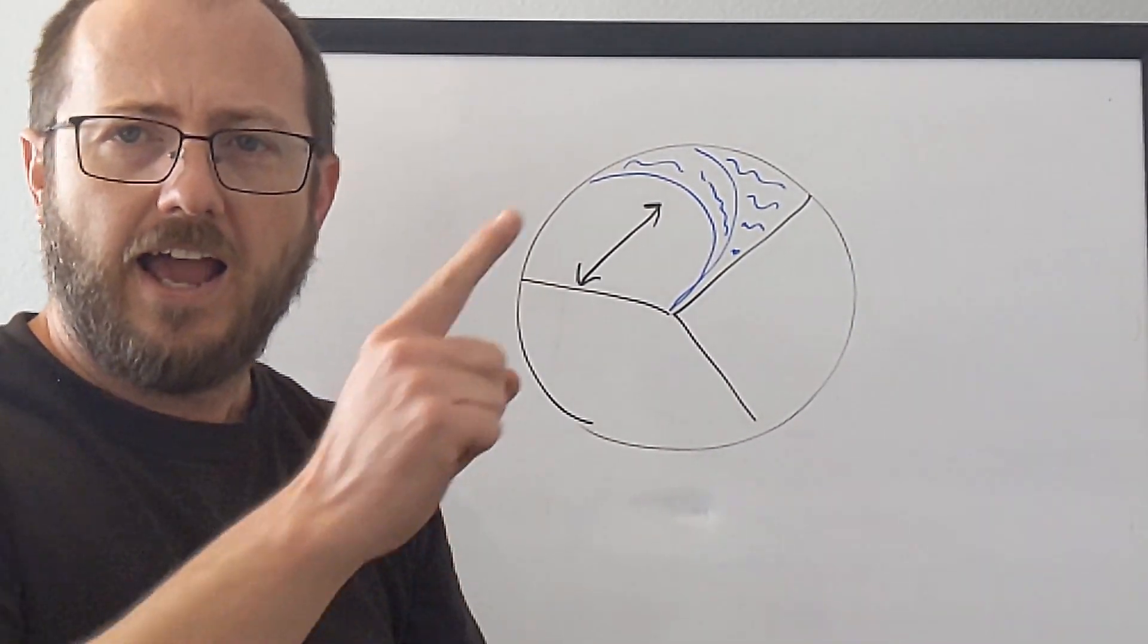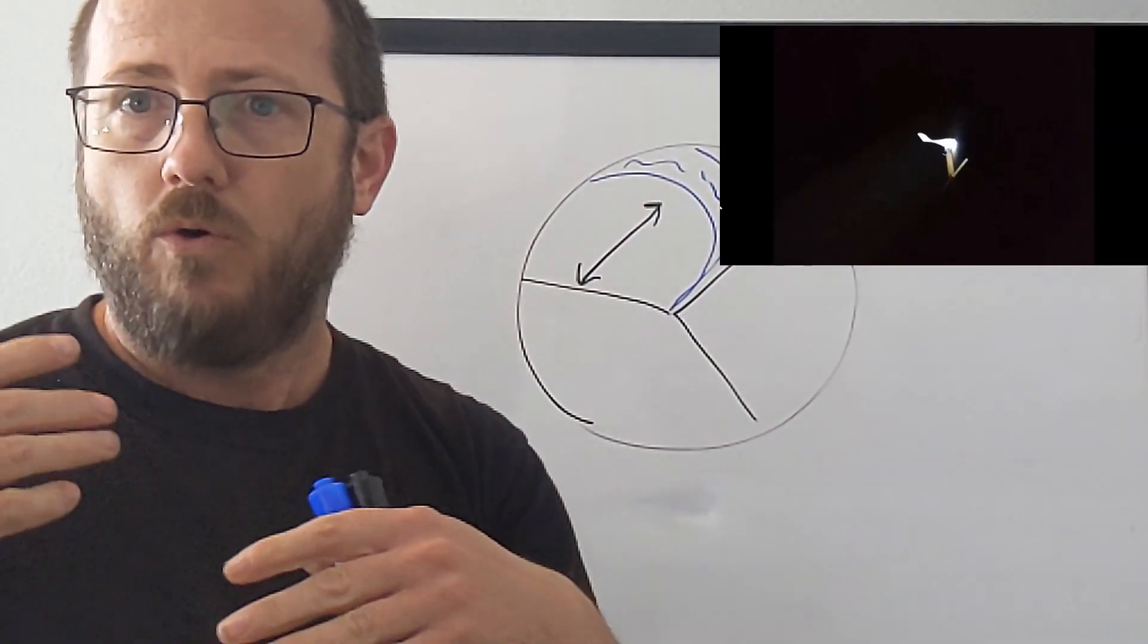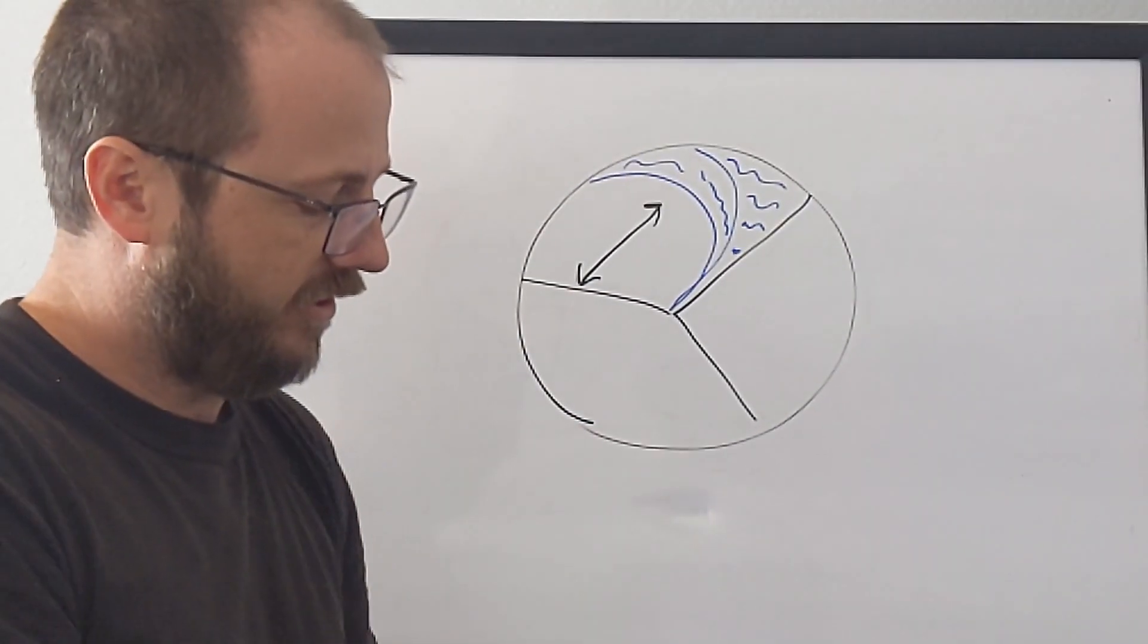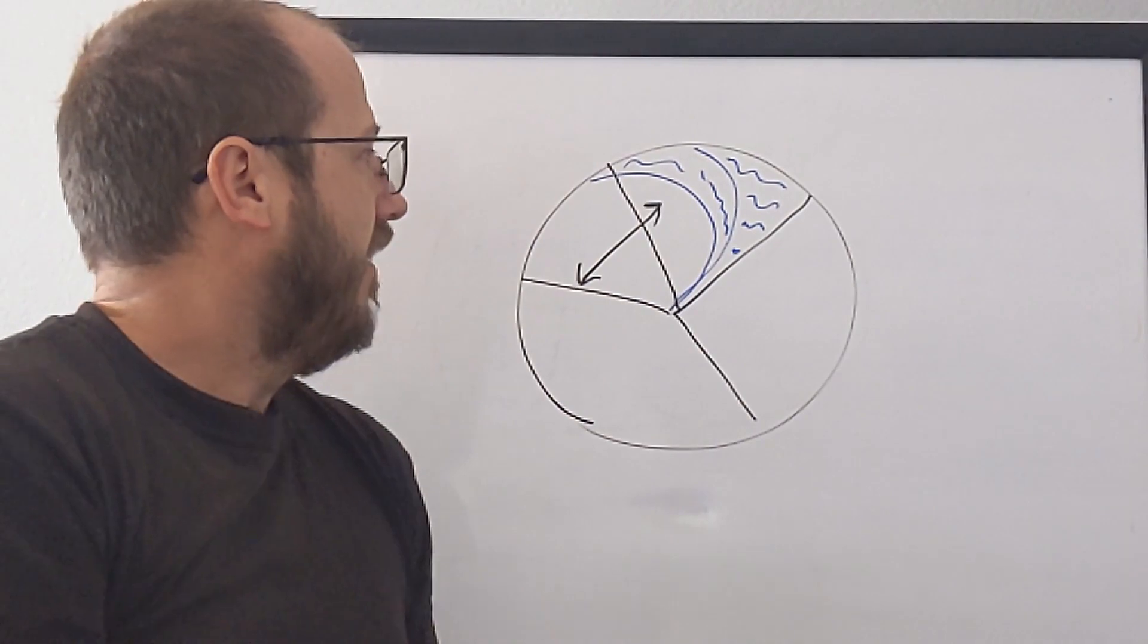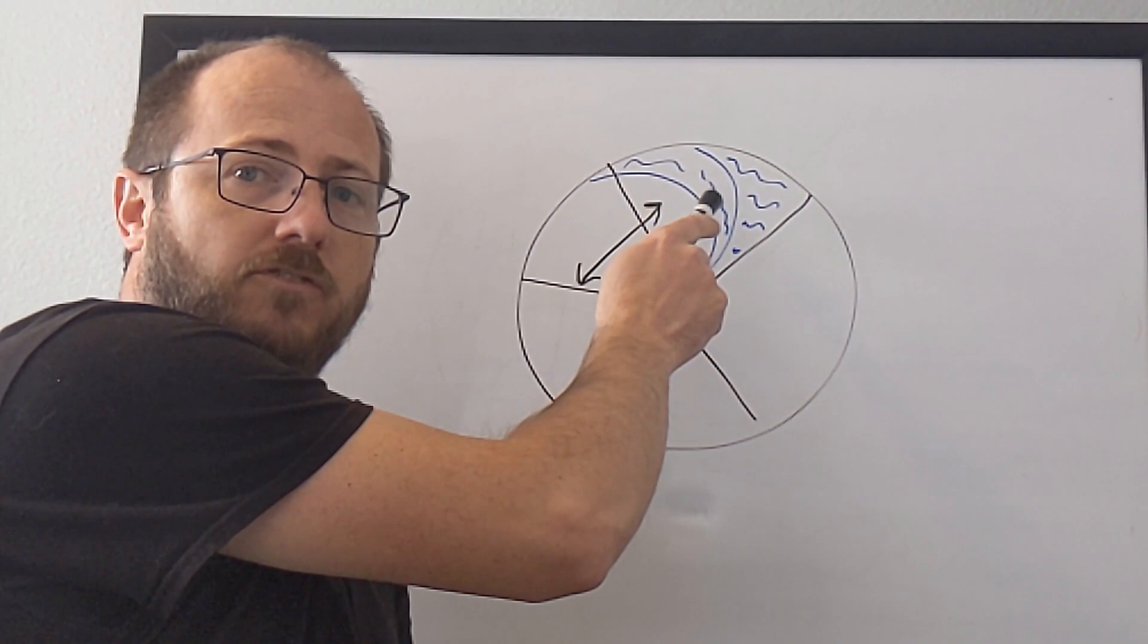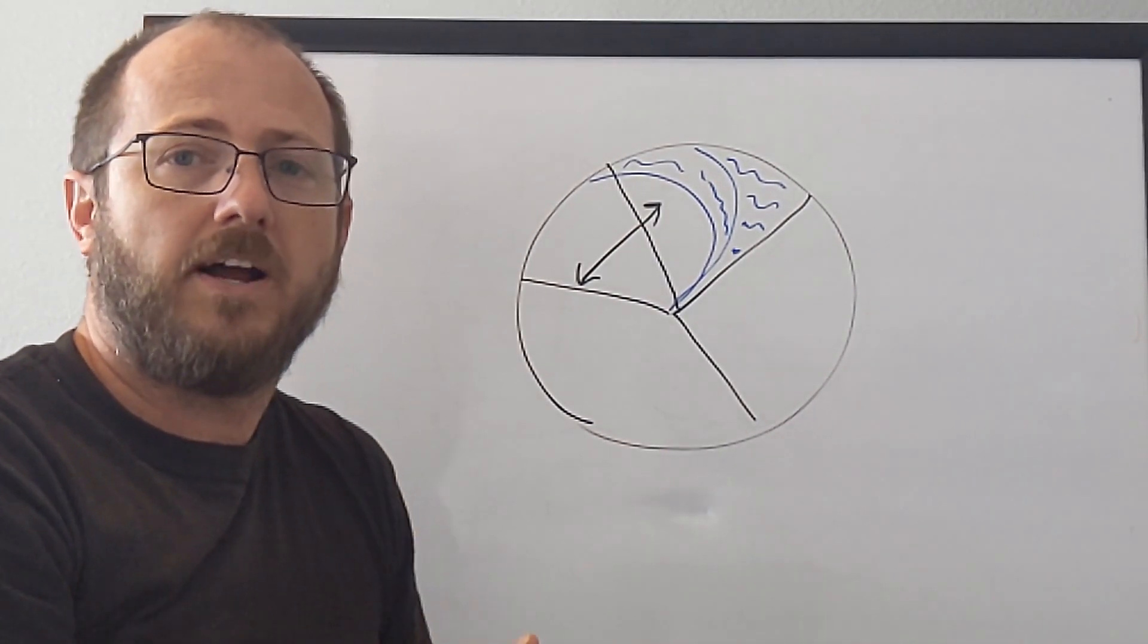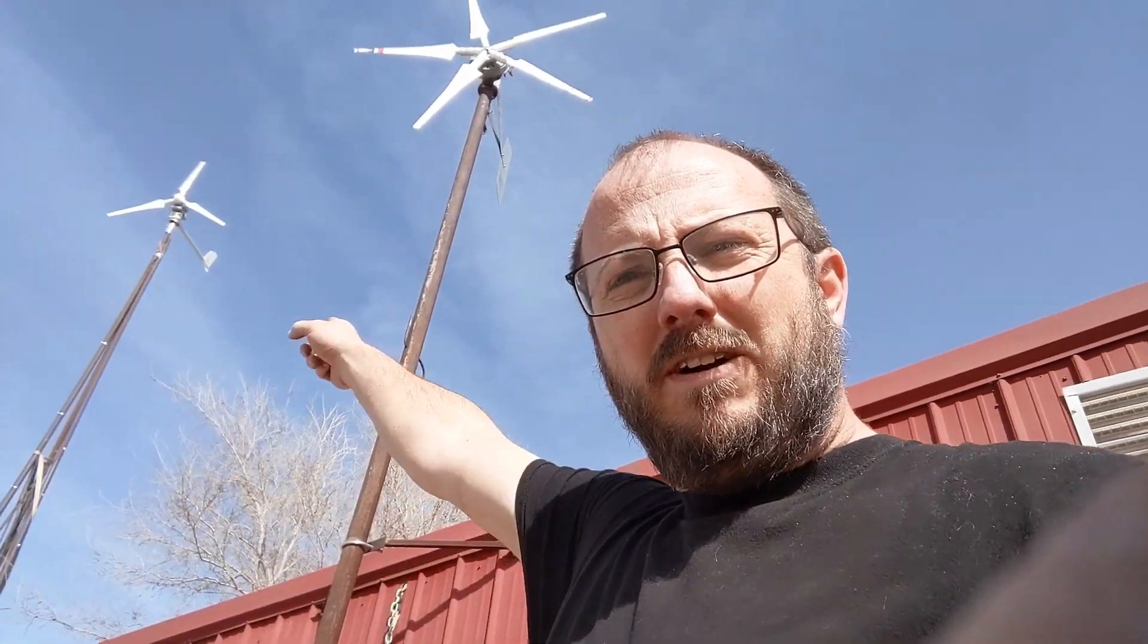So why does adding another blade slow it down? And that is because whenever you add another blade, that distance between this blade and that turbulent air from the blade in front of it is smaller. The smaller that distance is, the slower the turbine can go before all those blades start entering turbulent air. So now you might say, but Justin, you're using five blades on one of your turbines on purpose. And that's because there's exceptions to everything.